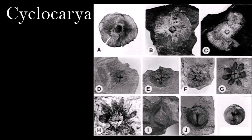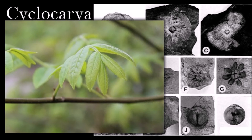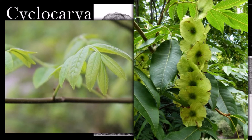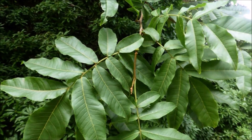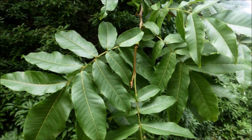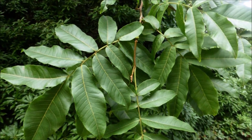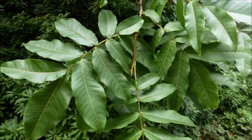Cyclocarya is a genus in the walnut family with only one living species. It is a deciduous tree growing to about 30 meters tall with pinnately divided leaves and male and female catkins; its distinctive fruits are surrounded by disc-like wings that help them disperse in the wind. Fossils of the walnut family are known from the late Cretaceous of North America and Europe, but the first genus of living plants to appear is Cyclocarya in the Paleogene, a genus that quickly spread from North America to Europe and Asia. Fossil assemblages where Cyclocarya has occurred have also included Glyptostrobus and Metasequoia, suggesting a warmer temperate to subtropical climate. Today Cyclocarya is found only in China.